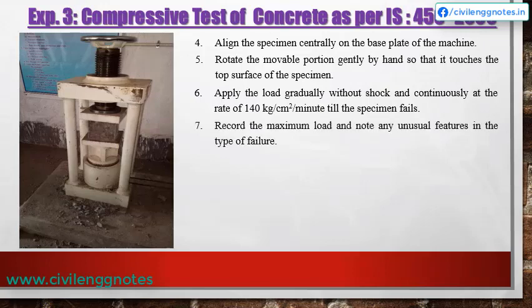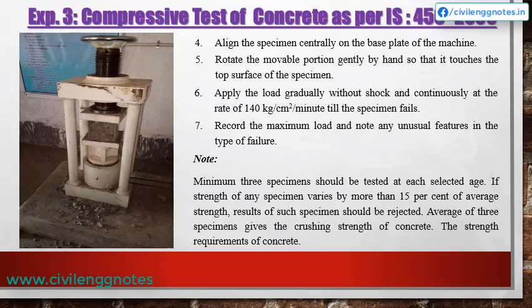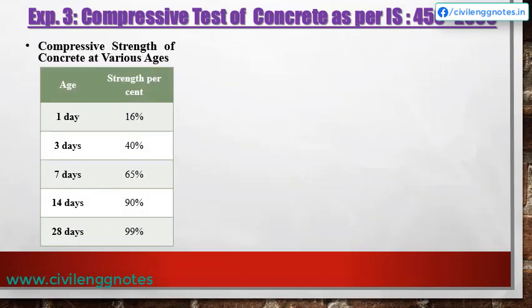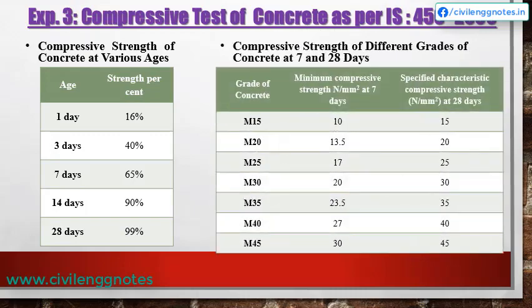Record the maximum load and note any unusual features in the type of failure. A minimum of three specimens should be tested at each selected age. If the strength of any specimen varies by more than 15% of the average strength, results of such specimens should be rejected. The average of three specimens gives the crushing strength of concrete. Tables show the compressive strength of concrete at various ages per Indian Standard, and compressive strength of different grades at 7 days and 28 days.